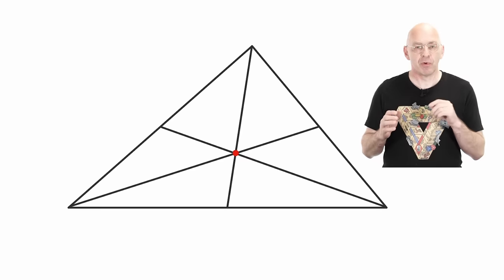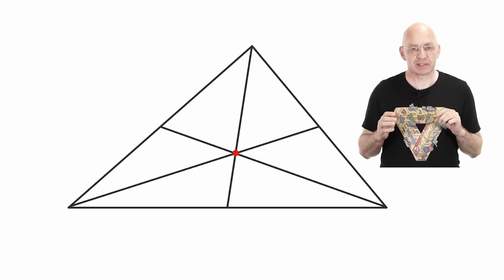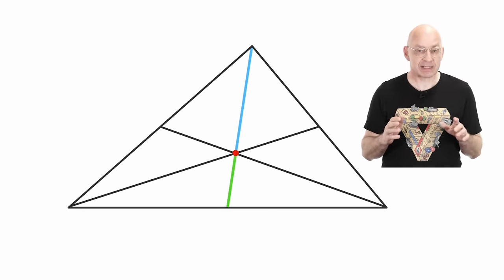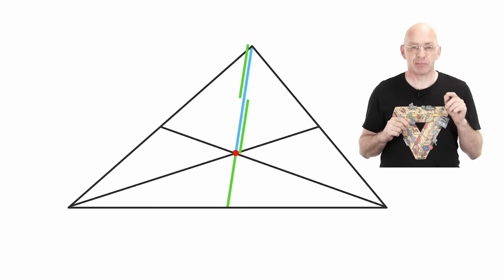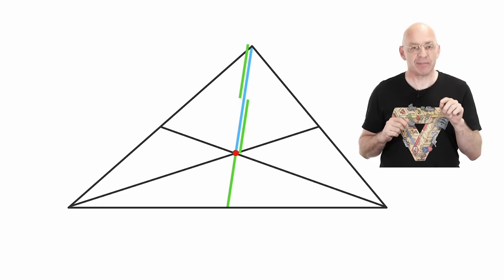Actually, we'll prove more than just the medians meeting in the centroid. We'll also show that the centroid splits every median in a long and a short part. And that long blue part is always exactly double the length of the short green part. The blue part is exactly twice as long as the green. Again, that's true for any median.